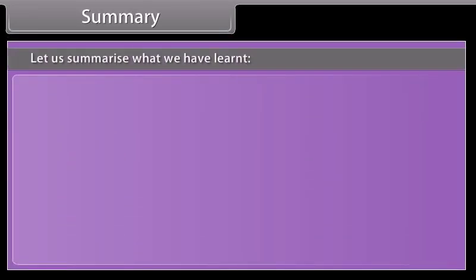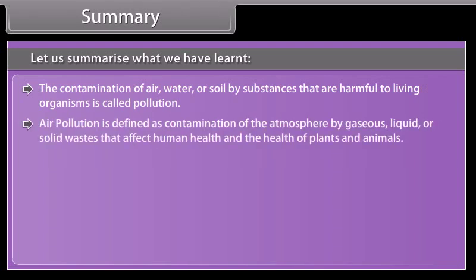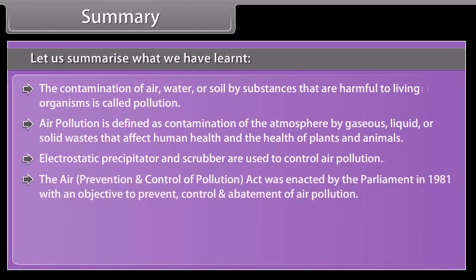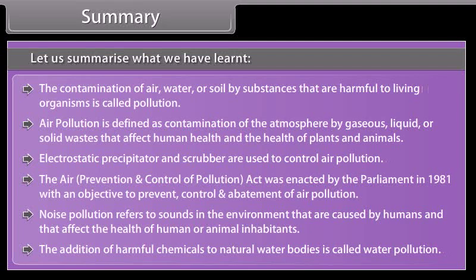Let us summarise what we have learnt. The contamination of air, water, or soil by substances harmful to living organisms is called pollution. Air pollution is defined as contamination of the atmosphere by gases, liquid, or solid wastes that affect human health and the health of plants and animals. Electrostatic precipitators and scrubbers are used to control air pollution. The Air Prevention and Control of Pollution Act was enacted by Parliament in 1981 to prevent, control, and abate air pollution. Noise pollution refers to sounds caused by humans that affect the health of human or animal inhabitants. The addition of harmful chemicals to natural water bodies is called water pollution.